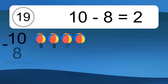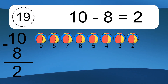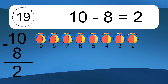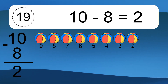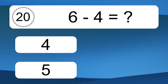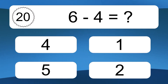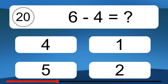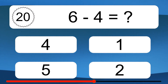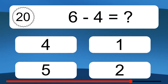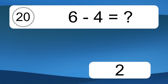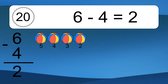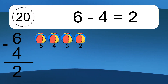10 minus 8 equals what? 10 minus 8 equals 2. Let's count it. 9, 8, 7, 6, 5, 4, 3, 2. 6 minus 4 equals what? 6 minus 4 equals 2. Let's count it. 5, 4, 3, 2.